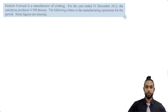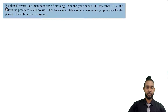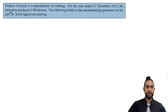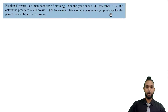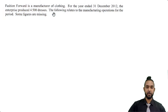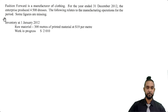Okay, so as per usual we're going to take a read of the information first. So Fashion Forward is a manufacturer of clothing. For the year ended 31st December 2012, the enterprise produced 4,500 dresses. The following relates to the manufacturing operations for the period. Some figures are missing, so we're going to take a look at some information here.